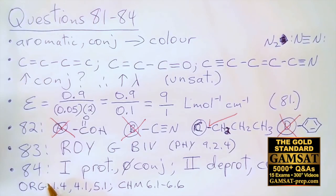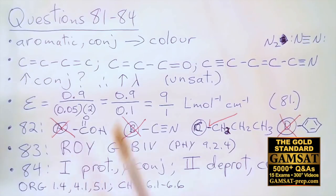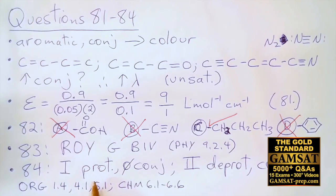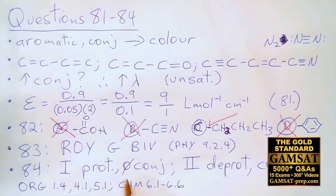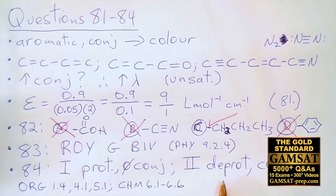Question 84: phenolphthalein — a frequent visitor to the exam. One form is colorless and the other is pink. It is a famous acid-base indicator that changes color with pH. Applying what we've learned: conjugation refers to color. Look at structure one compared to structure two. Structure one is relatively protonated — you can clearly see additional H groups towards the top — and it is not conjugated. In the middle of the molecule there's an area where two single bonds appear in a row, connecting the benzene ring with the phenol — two single bonds in a row means no conjugation.